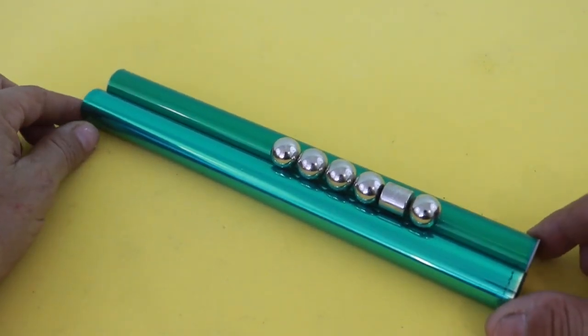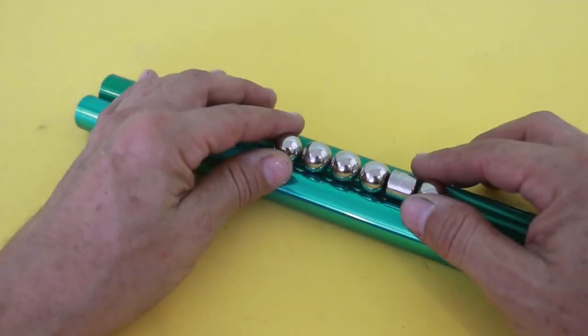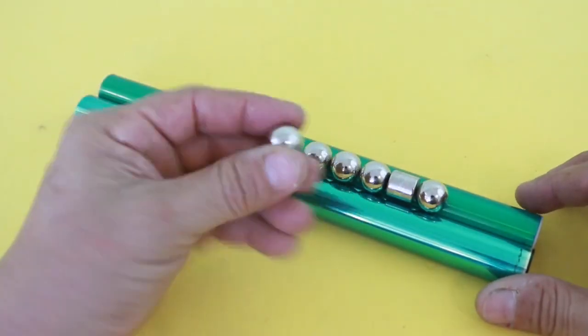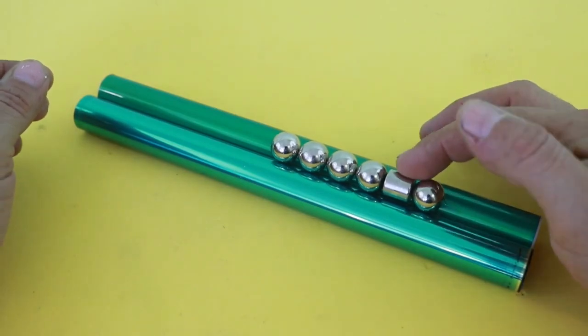What I have here is a Gauss cannon and as you can see it consists only of a series of steel balls and here I have a neodymium magnet.